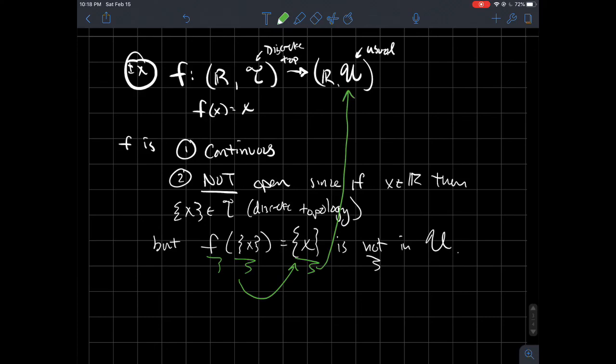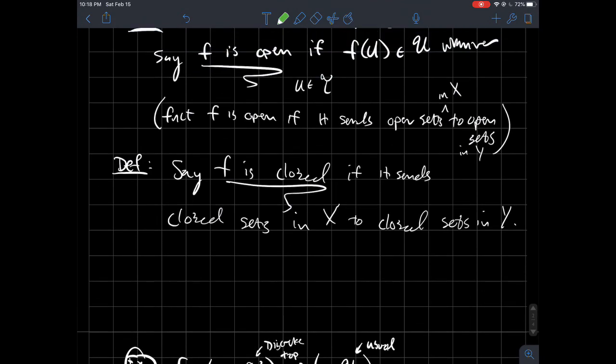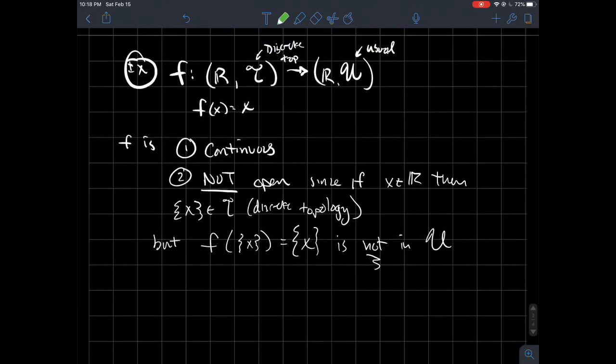Cool. So I'm just saying that f doesn't change the set. It spits out this singleton set x here. But I know that singletons are not open in the usual topology here. I know that they're closed. And so what did I just show? I showed that there exists an open set whose image is not open. And that violates the definition of what it meant for the function f to be open. So f is continuous, but f is not open.